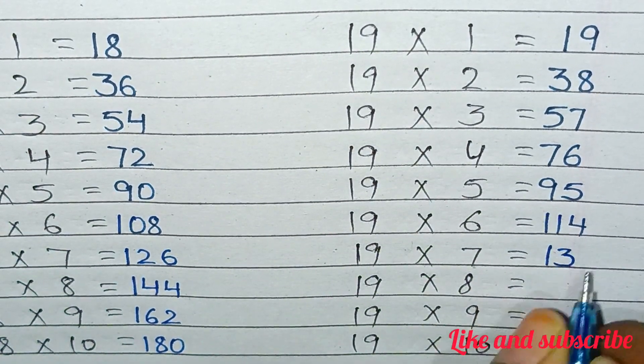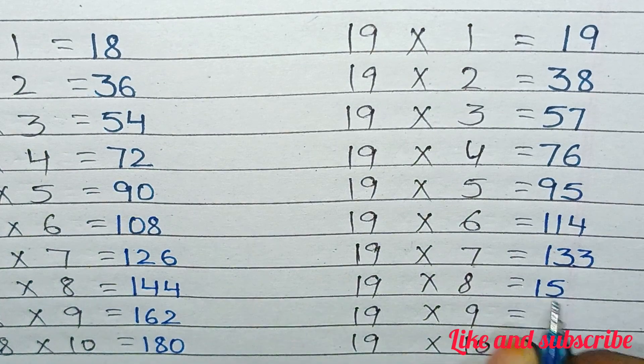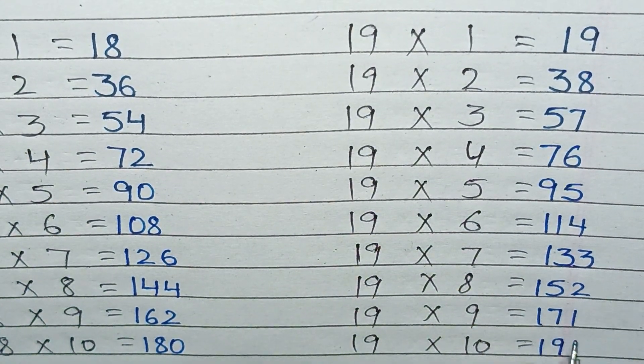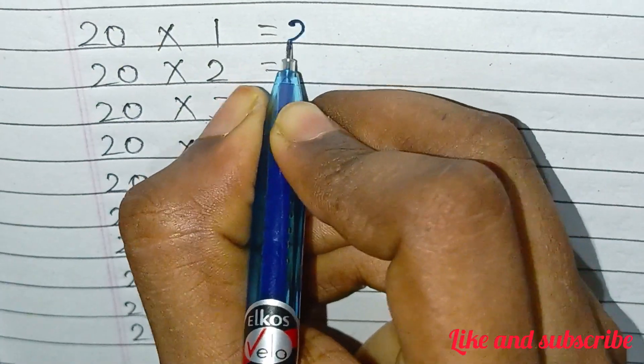19×6=114, 19×7=133, 19×8=152, 19×9=171, 19×10=190.